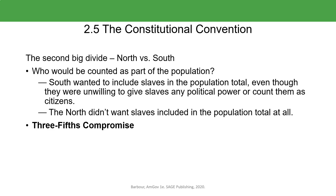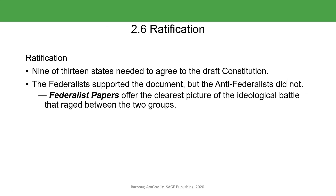They came up with what was called the Three-Fifths Compromise. The Three-Fifths Compromise basically said that slaves would be counted as three-fifths of a person — each slave is three-fifths of a person for purposes of taxation. So for every five slaves, three would be counted as persons for representation. It's a really bizarre situation.